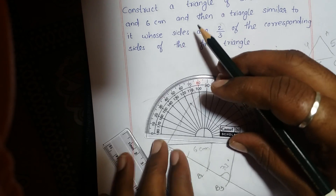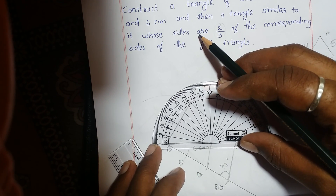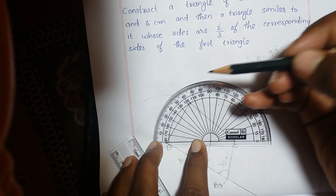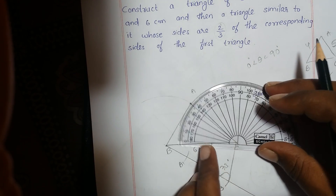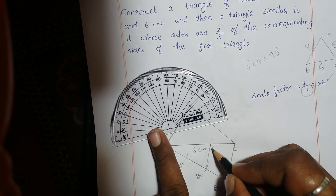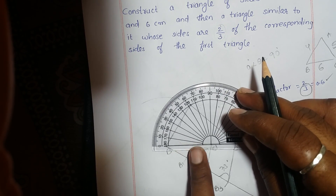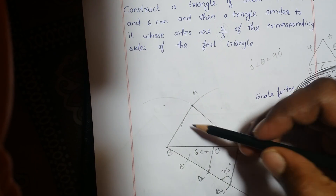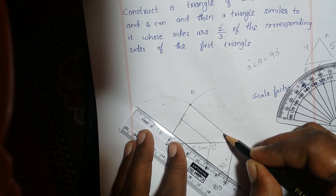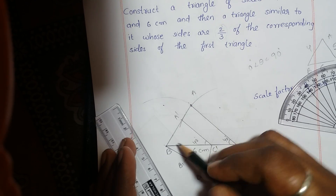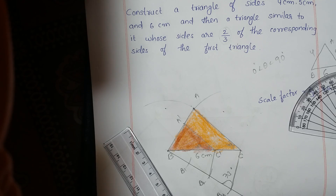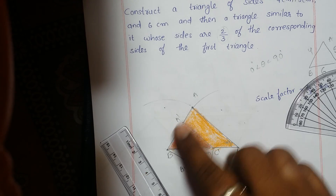Now measure the angle — let's see, 40 degrees is there. At C dash, take an angle of 40 degrees. Join this and you are going to get a triangle. This is the required triangle for us. A'BC' is the new triangle and ABC is the original triangle.